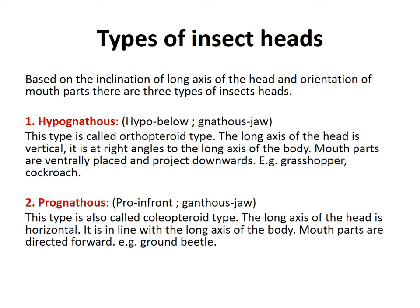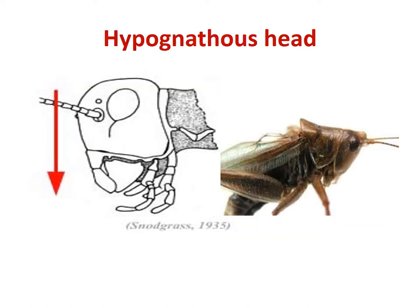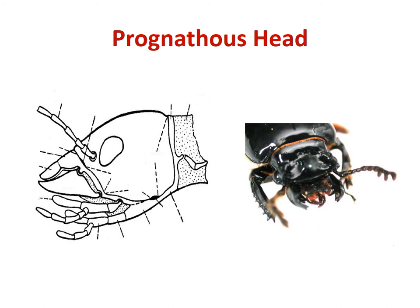The second type is prognathous, which is called the coleopteran type. The long axis of the head is horizontal, in line with the axis of the body. Mouth parts are also directed forward along the axis of the body. Examples are ground beetles. In the diagram, for hypognathous, the head is perpendicular to the body with mouth parts directed downward, as in grasshopper. For prognathous, as in beetles, mouth parts are along the axis of the body.